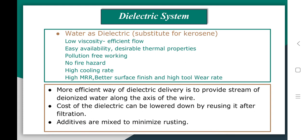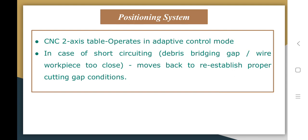The positioning system is usually a CNC two-axis table. However, it operates in an adaptive control mode so that if the wire approaches very near to the workpiece or the gap is bridged causing a short circuit, the positioning system can sense it instantaneously and move back to re-establish the proper cutting condition in the gap.